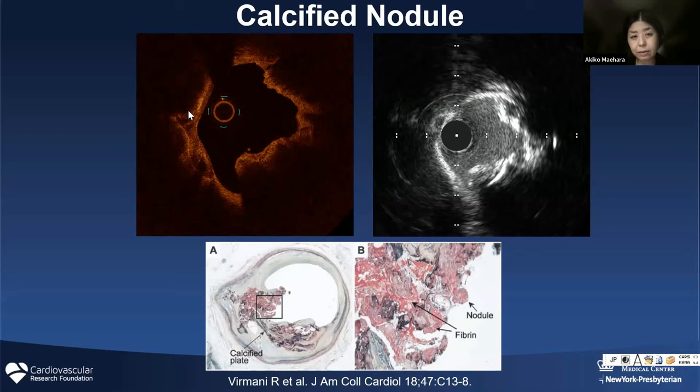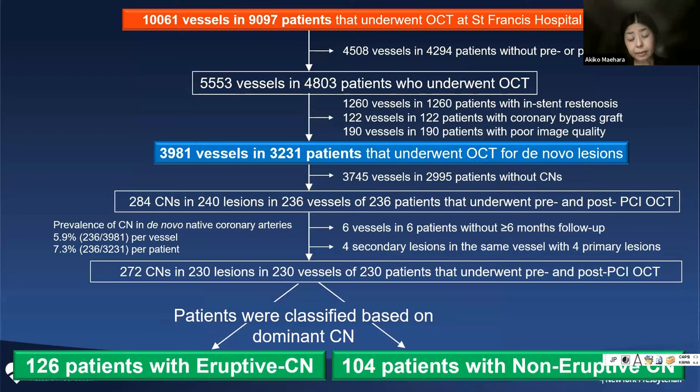We asked: what type of calcified nodule is bad? That's our original question. To answer that question, we looked into about 10,000 OCTs. We found about 4,000 vessels having pre- and post-OCT in the de novo region. My fellow looked at everything, and finally we found about 230 calcified nodules.